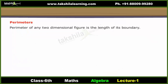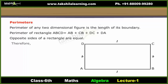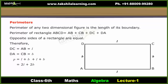Perimeters: The perimeter of any two-dimensional figure is the length of its boundary. Perimeter of rectangle ABCD equals AB plus CB plus DC plus DA. Opposite sides of a rectangle are equal. Therefore, DC equals AB equals L for length, and DA equals CB equals B for breadth. If perimeter is represented by the variable P, then P equals L plus B plus L plus B, equals 2L plus 2B, equals 2(L plus B). Variable P varies with variations in variables L and B.